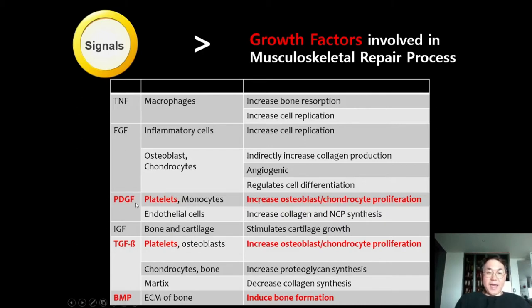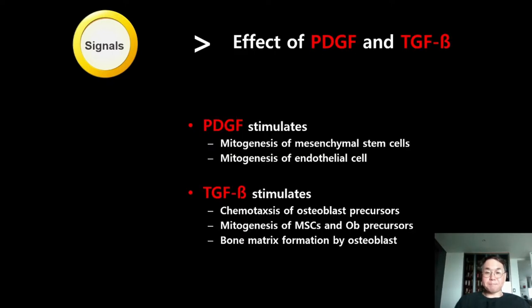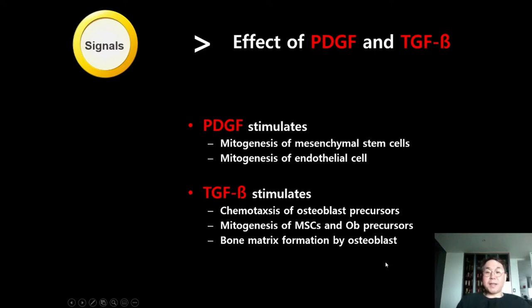PDGF and TGF-beta are located inside platelets, so we need blood. Bone graft material should be saturated by fresh blood to obtain PDGF and TGF-beta. PDGF stimulates mitogenesis of mesenchymal stem cells, increasing their number. TGF-beta stimulates chemotaxis of osteoblast precursors and direct bone matrix formation by stimulating osteoblasts. So PDGF and TGF-beta are the most important signaling molecules.